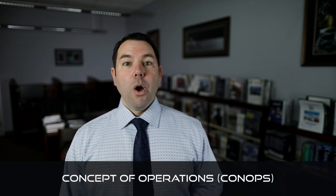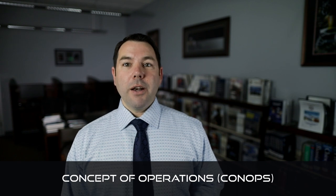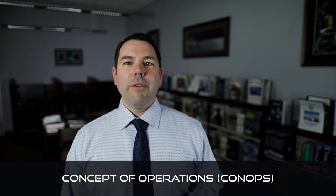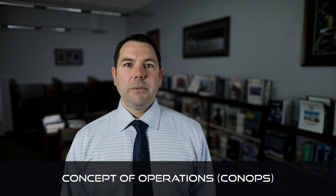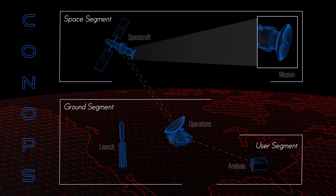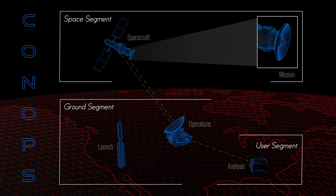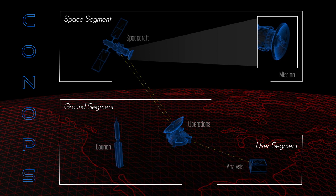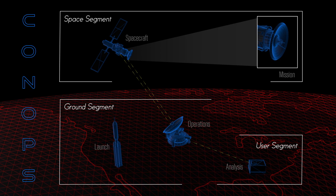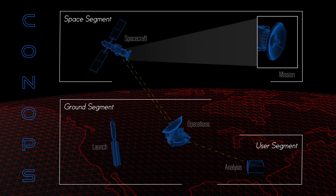Now that we know fundamentally what a space system is, it's time to dig into the details so we can better understand how the system will be used. The best place to start is with a concept of operations, or CONOPS. The CONOPS is a verbal or visual depiction of how the system will be used. A good CONOPS will be clear and concise when describing the mission, while highlighting any other systems the space system relies upon, and details how the segments work together to conduct the mission.